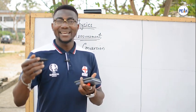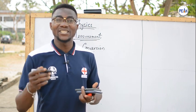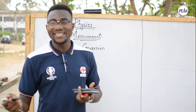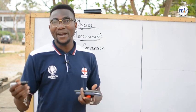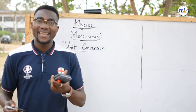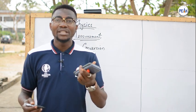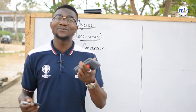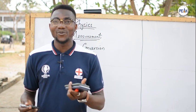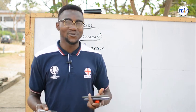We also have the sub-multiples — powers of 10 that are negative: 10 to the power minus 1 is deci, minus 2 is centi, minus 3 is milli, minus 6 is micro, minus 9 is nano, minus 12 is pico, minus 15 is femto, minus 18 is atto, minus 21 is zepto, and minus 24 is yocto.